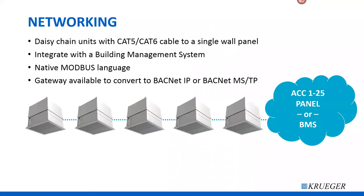Networking these devices is definitely an option. You can daisy chain the units using CAT5 or CAT6 cables, connecting them to a wall panel such as the ACC 1-25, which can be wall mounted and control up to 25 units via daisy chain. You can also integrate the units directly into your building management system. The native language is Modbus, with gateways available to convert to BACnet IP or BACnet MSTP.